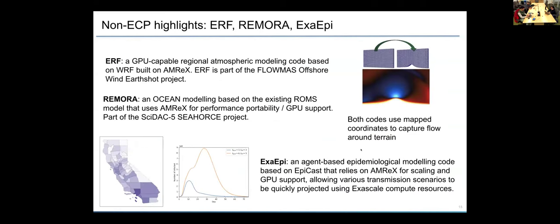Finally, I just want to highlight a few non-ECP applications, just to show you kind of where the current development is with AMReX-based codes. So there's ERF, which is a GPU capable regional atmospheric modeling code based on the WRF code that was built on AMReX. ERF is part of the Flowmass Offshore Wind Earthshot project. There's REMORA, which is an ocean modeling code based on the existing ROMS model that uses AMReX for performance portability and GPU support. This is part of the Psyduck 5 Seahorse project. Both of these codes use mapped coordinates to capture flow around terrain.